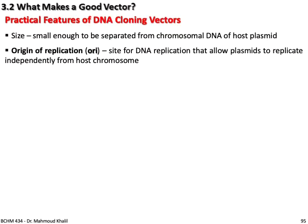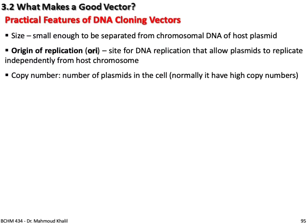The second topic: what makes a good vector? Practical features of DNA cloning vectors include: size — the plasmid is small enough to be easily separated from the chromosomal DNA of the host. Origin of replication — every plasmid has an origin of replication, a site for DNA replication that allows the plasmid to replicate independently from the host chromosomes. Copy number — the number of plasmids in the cell, which is normally high.